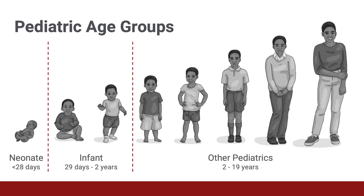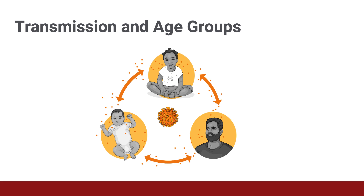Let's delve deeper into the particulars of how COVID manifests in children. Early in the pandemic, children were called silent spreaders. This came from a misconception that children could spread COVID but wouldn't get sick themselves. We now understand that COVID may be contracted by all humans regardless of age group, and this diagram shows interchangeable transmission of COVID-19 through all age groups. Children aren't the main source of infection in communities; young children are less likely than older children and adults to spread COVID.